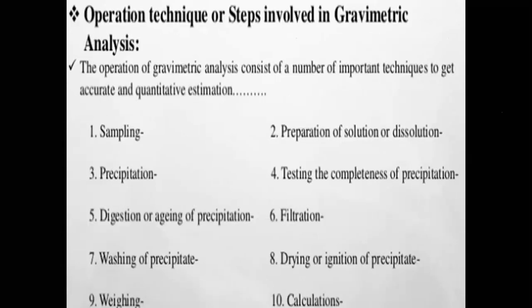The techniques or steps involved in gravimetric analysis are ten in total: (1) sampling, (2) preparation of solution or dissolution, (3) precipitation, (4) testing the completeness of precipitation, (5) digestion or aging, (6) filtration, (7) washing of precipitate, (8) drying or ignition depending upon the nature of the analyte, (9) weighing, and (10) calculation. By performing these ten basic steps we can find out the concentration of the analyte.